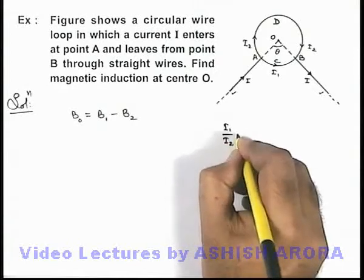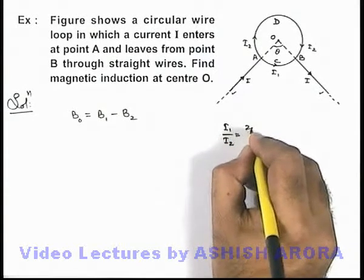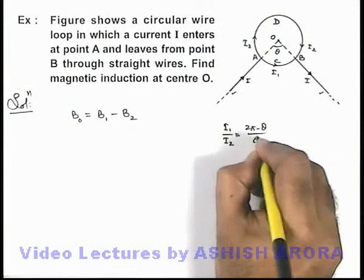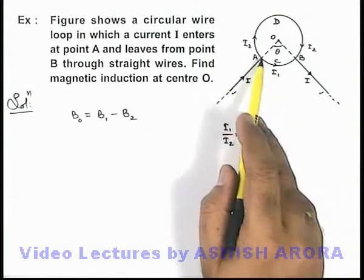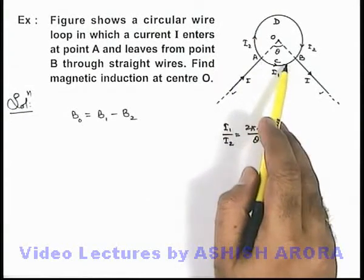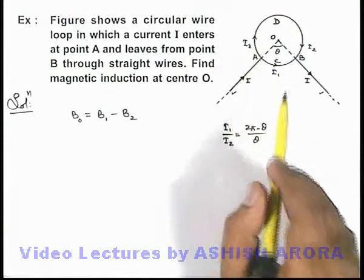i1 by i2 must be equal to 2π minus θ by θ because the smaller arc will carry larger current because its resistance is lesser.